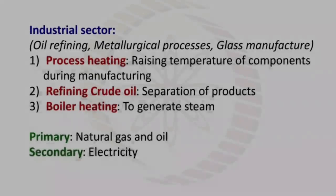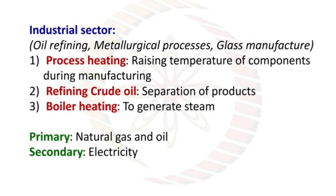In the industrial sector, process heating involves raising the temperature of components during manufacturing, refining crude oil, separation of products, and boiler heating to generate steam. The primary sources of energy for this are natural gas and oil, with electricity as a secondary source.